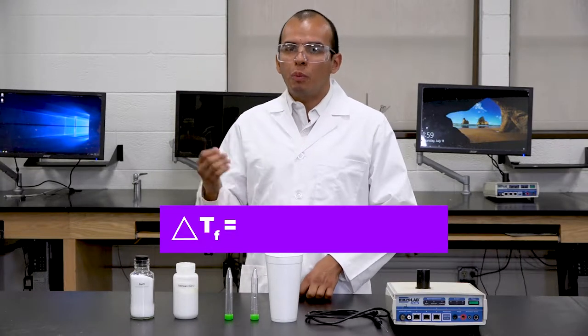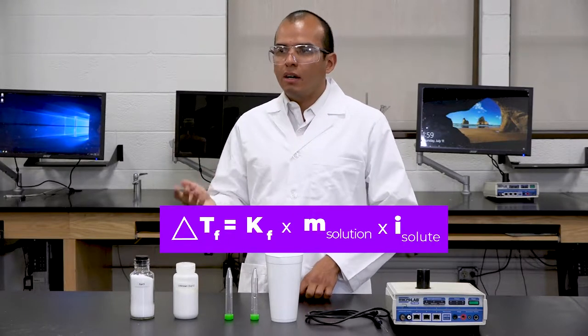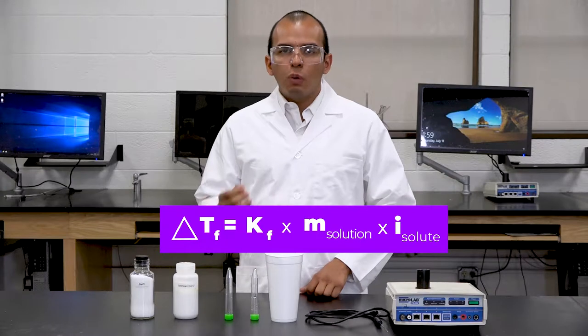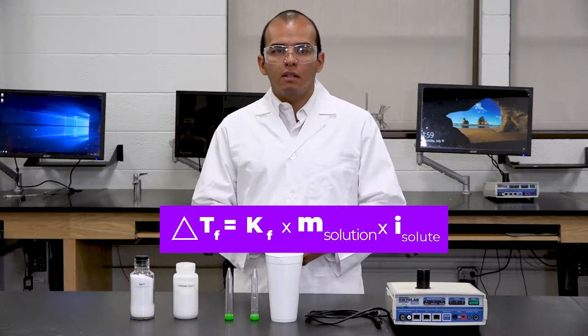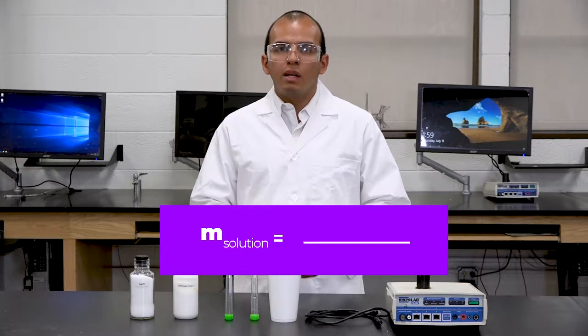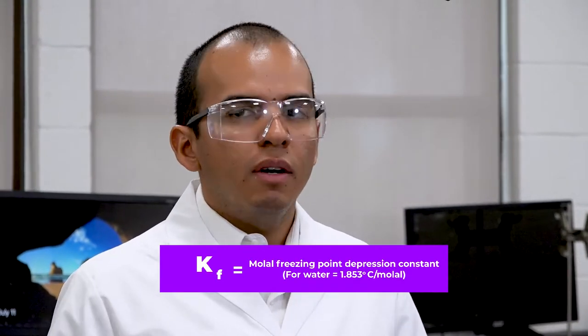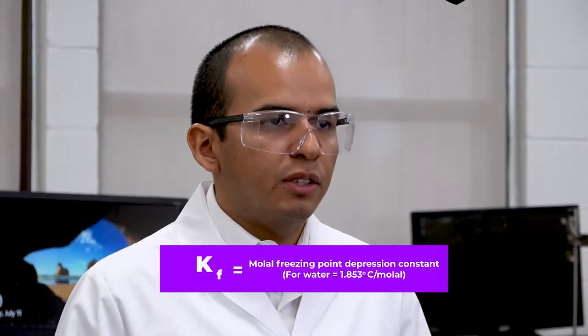Freezing point depression equals the molality times the freezing point depression constant of water times the van't Hoff factor, i. To define each value: molality is a unit of measurement that includes the moles of the solute divided by the kilograms of the solvent. The freezing point depression constant of water, Kf, is 1.853 degrees Celsius per molal.